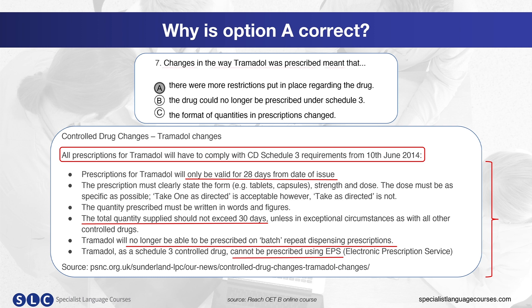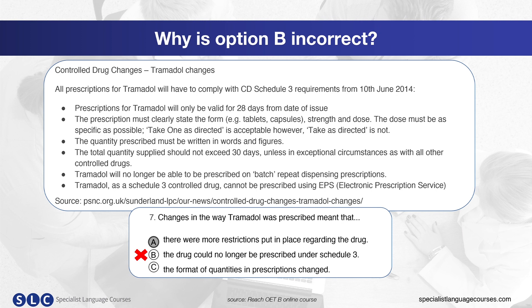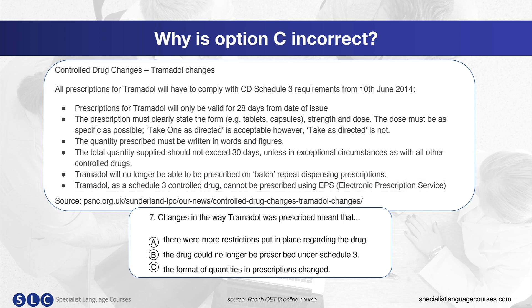Let's look at why option B is incorrect. At the end of the text it states that tramadol as a Schedule 3 controlled drug cannot be prescribed using EPS — so option B is incorrect. Looking at option C, the text states that the quantity prescribed must be written in words and figures. However, it does not specify whether this is a change or simply reiterating what must be done to comply with CD schedule requirements. So option C is also incorrect.